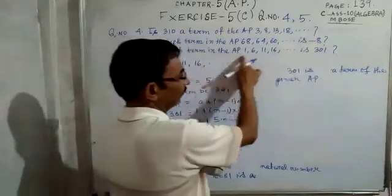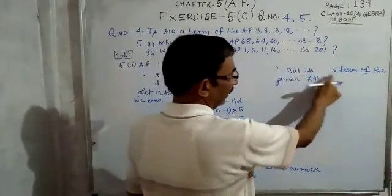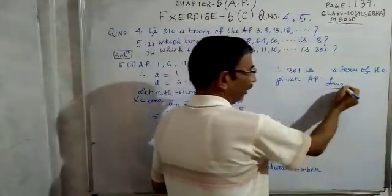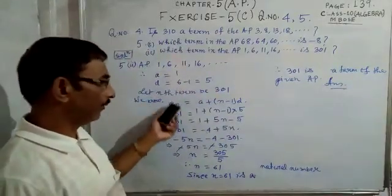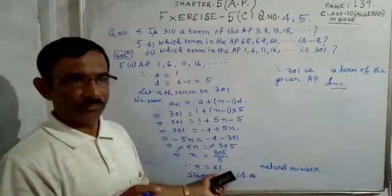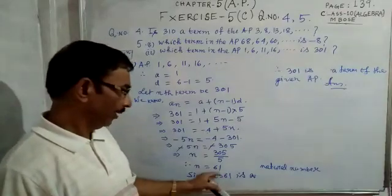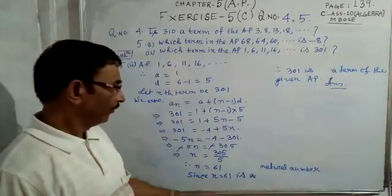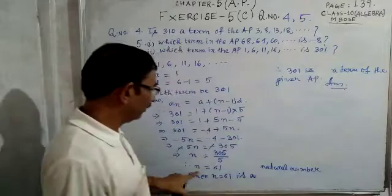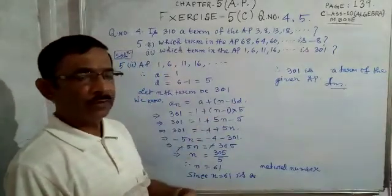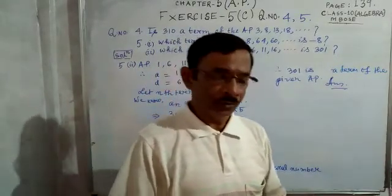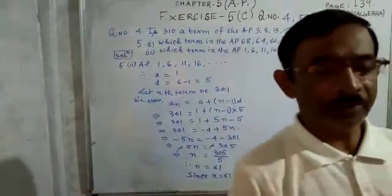So the answer is that 301 is a term of the given AP. To summarize: find the value of n using the nth term formula — if n is a natural number, the value is a term of the AP; if n is a fraction, it is not. Keep watching and we will continue with the next sums.